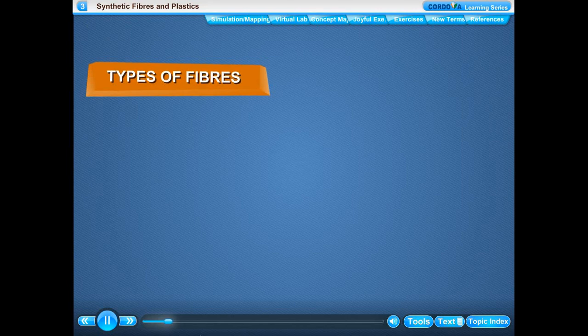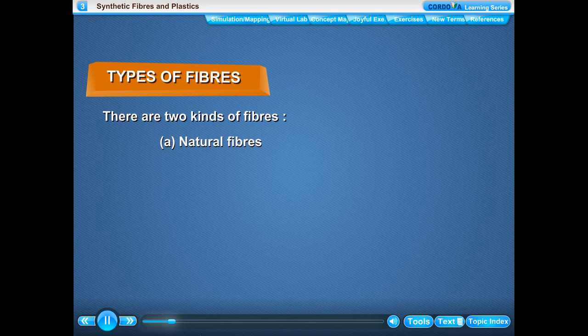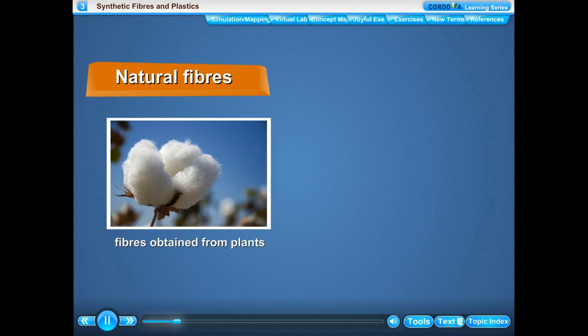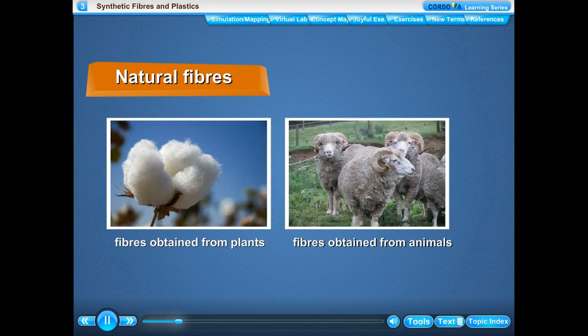Types of Fibers: There are two kinds of fibers - natural fibers and human-made or synthetic fibers. We know that fibers can be obtained from both plants and animals.